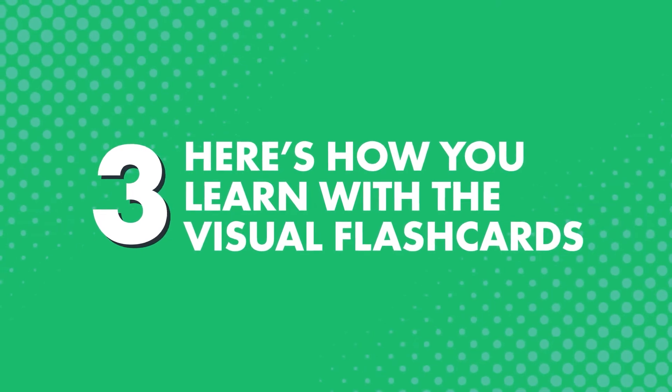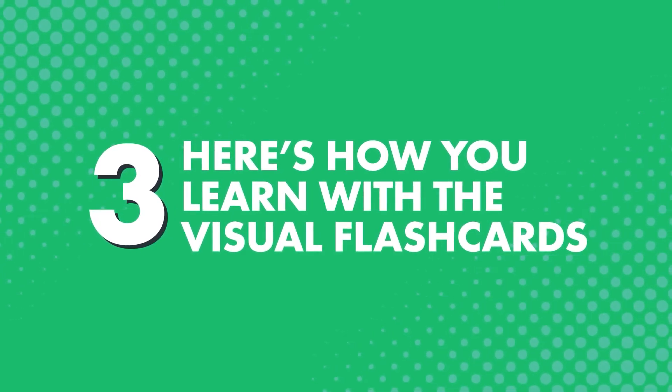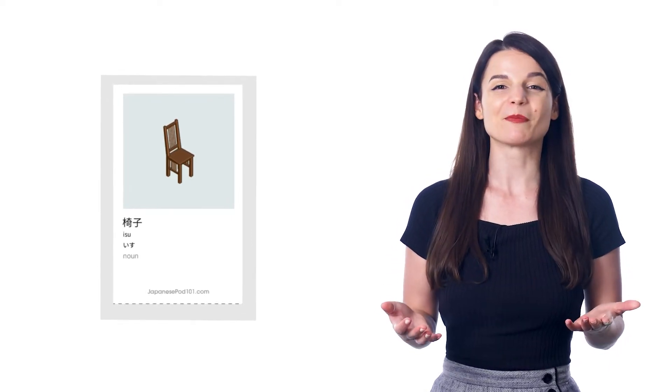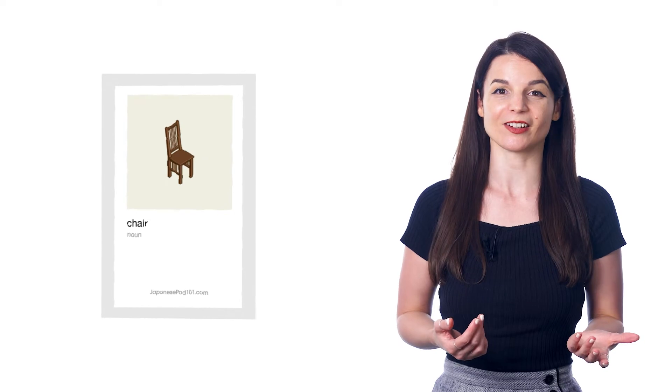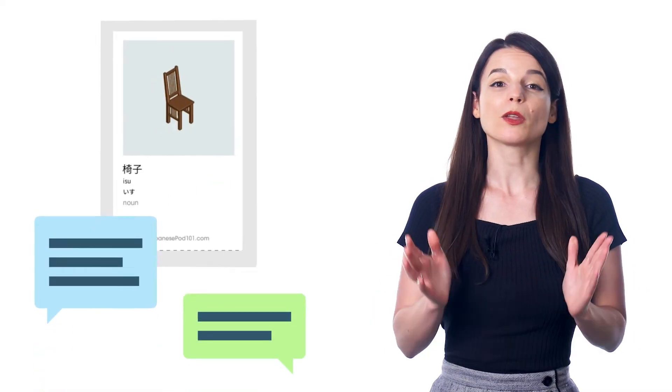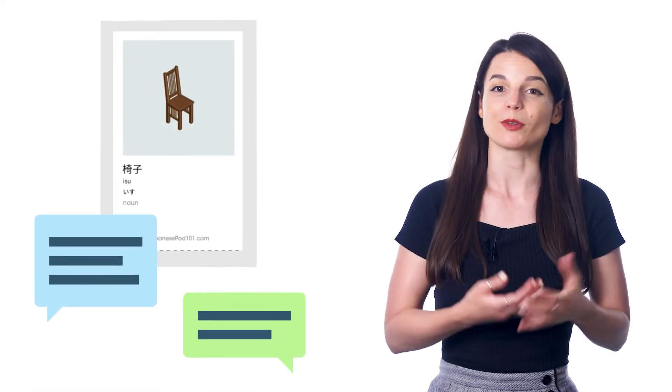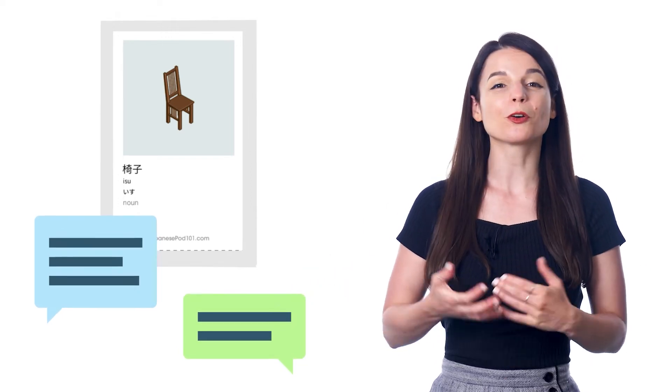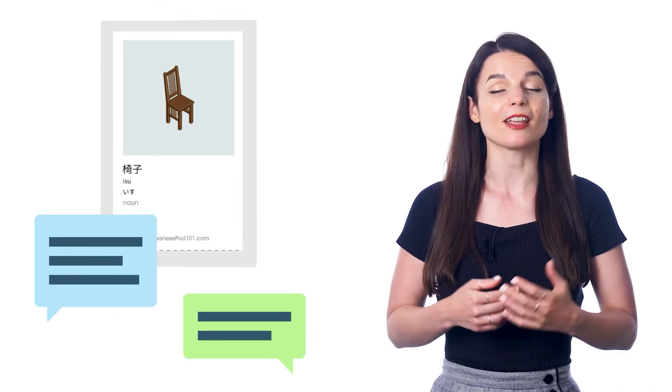Third, here's how you learn with the visual flashcards. After printing and cutting them out, you can go through the cards and review them for just a few minutes a day. Also, be sure to read the words out loud for speaking practice. You can also test yourself by looking at the meaning and trying to recall the word in the target language. If you don't remember, just flip the card over to get the answer. You can also have a friend test you. And you can place the cards on the objects they represent around your home. So, for the card for the window, you can tape that to the window, and you'll quickly memorize the word after seeing it a few times.